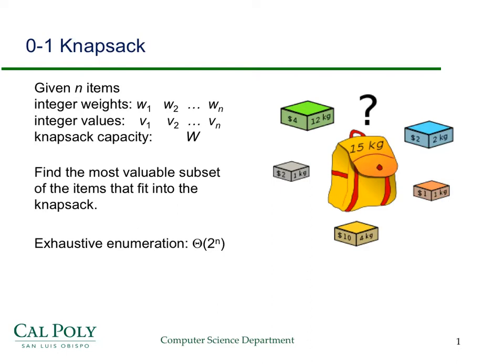So what is the zero-one knapsack problem? You can think of it as a thief walking into a high-end jewelry store with all sorts of expensive artifacts. There are N of those things scattered around the room, all conveniently labeled with their weights and values. The thief, not being very athletic or strong, has a knapsack that will only carry 15 kilograms, and wants to find the most valuable subset of items that fit.